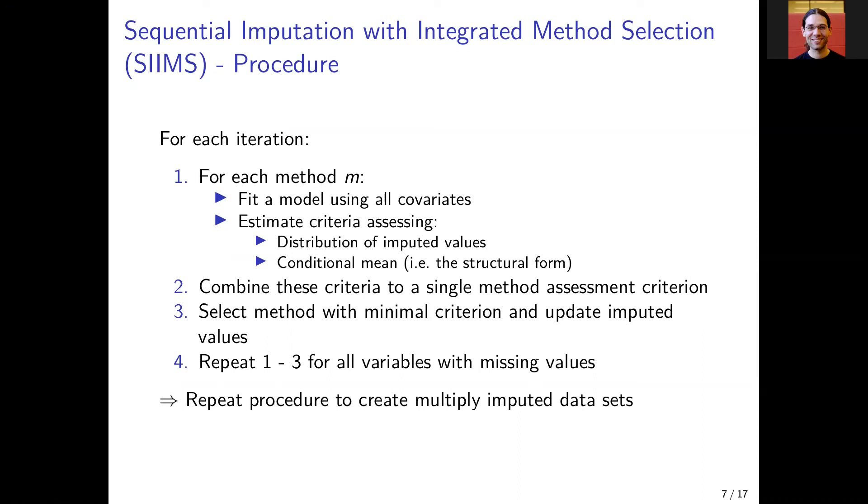In the last step, we repeat the first three steps for each variable with missing values and do that iteratively and update the missing values so that we receive one imputed data set.